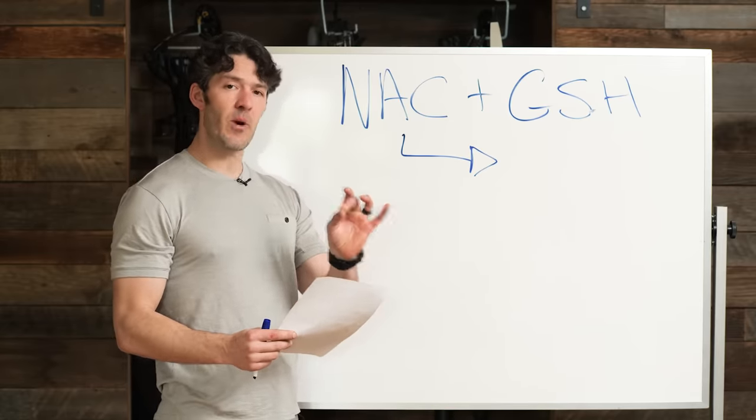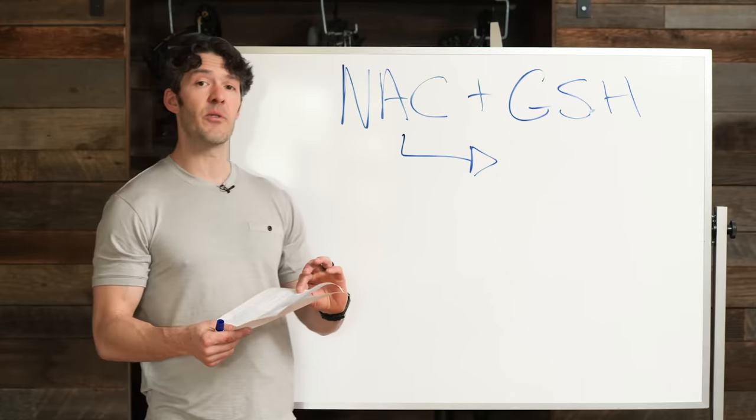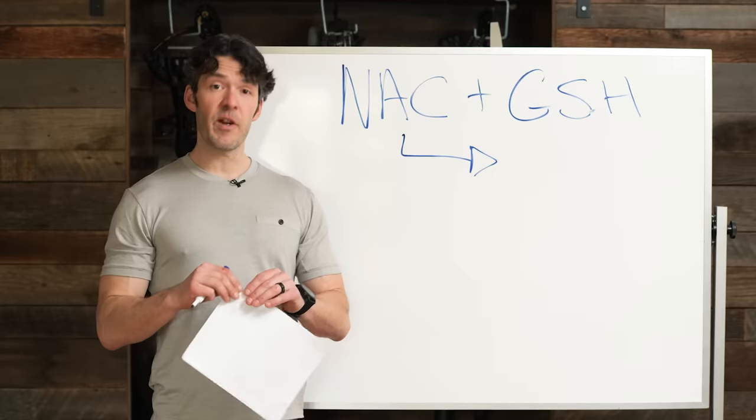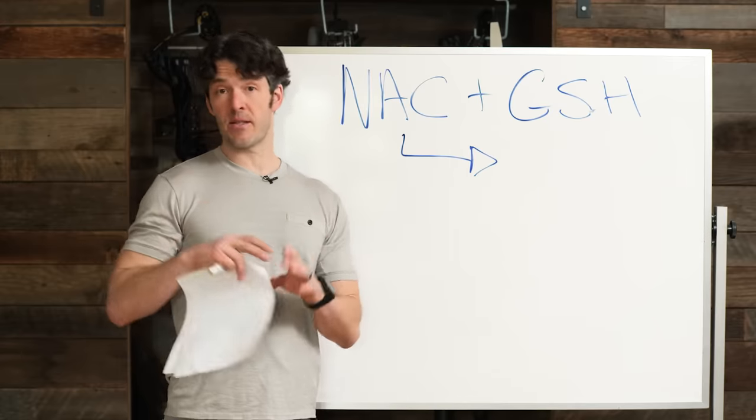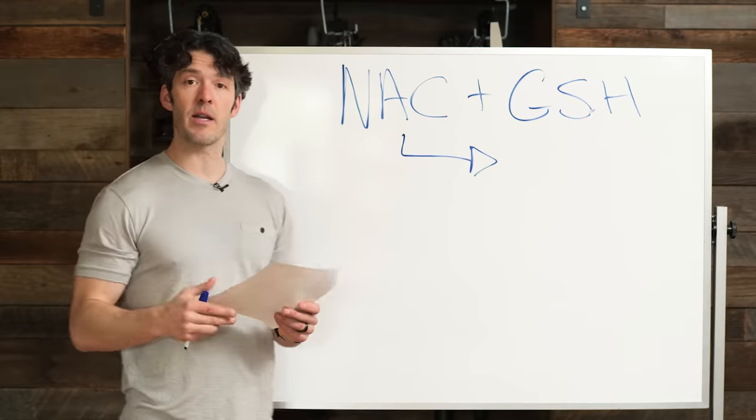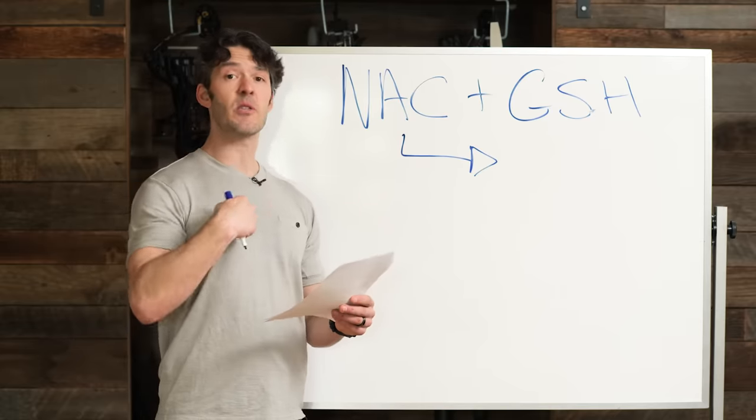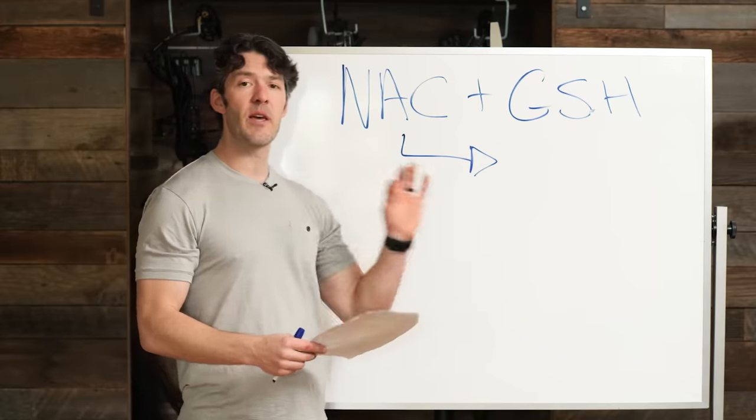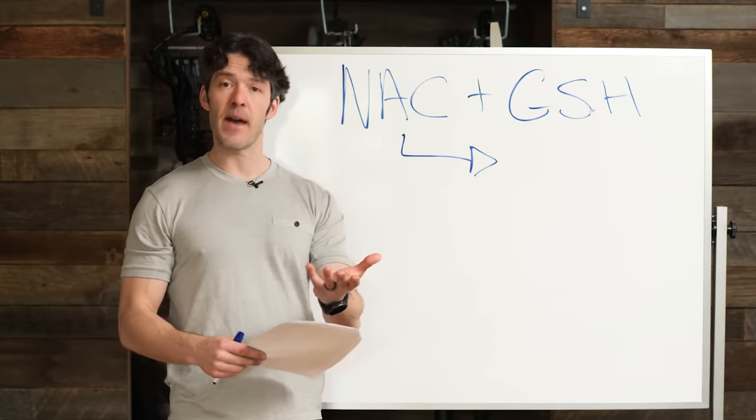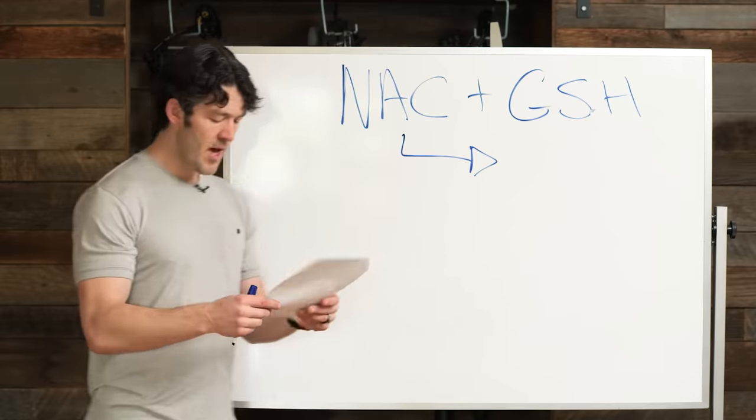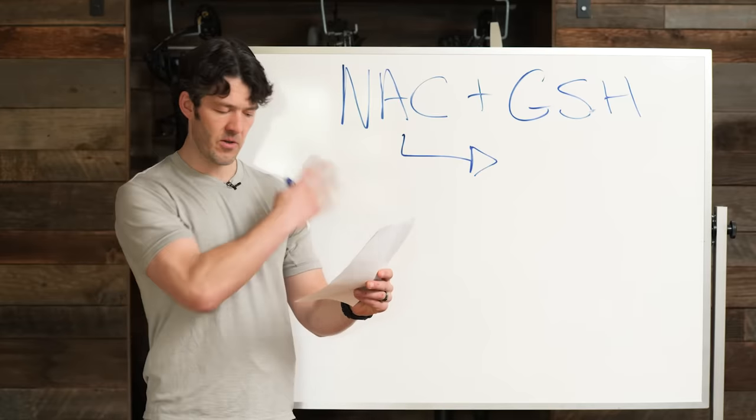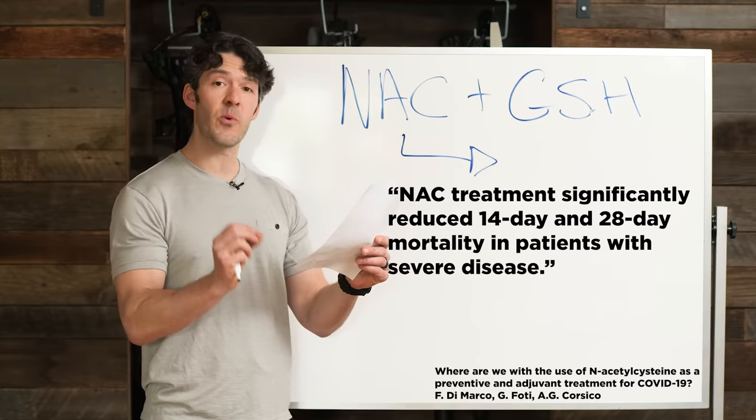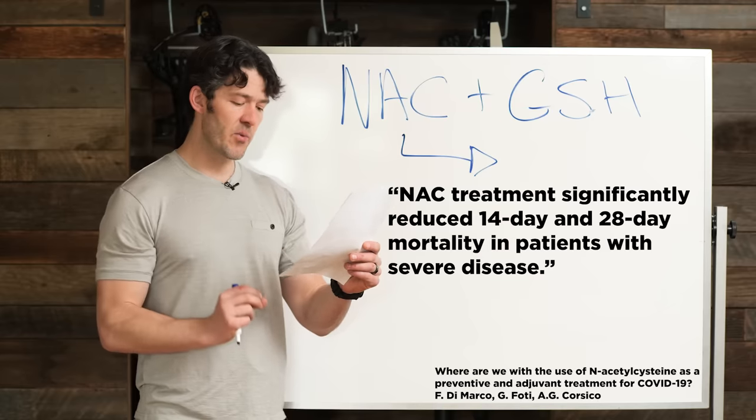But there's a new mechanism that I want to talk to you about, and that is related to the clotting cascade. This is also important in the context of the active infection, but the other things that are being talked about a lot, because we know clotting can be a challenge here. So I just want to share with you, because this was new to me, and it has to do with how glutathione can decrease platelet aggregation and clotting. I'll share this up on the screen here: N-acetylcysteine treatment significantly reduced 14-day and 28-day mortality in patients with severe COVID-19.